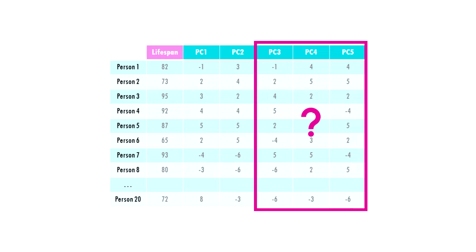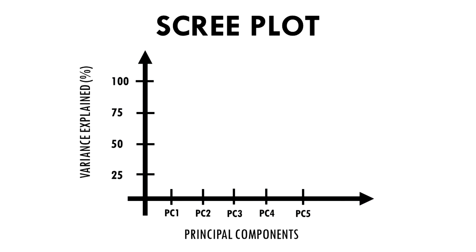But what about the other PCs? How do we know if the first two principal components are enough to capture most of the information, or variance, in the dataset? Well, the solution to this is a scree plot. A scree plot tells you how much variance of the dataset, basically how much information, is explained with each principal component.